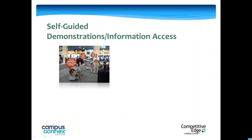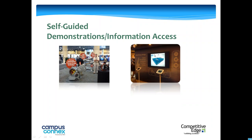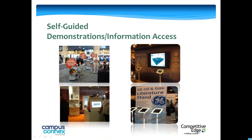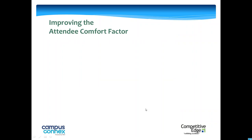Self-guided — sometimes if you have a product, it's like this example of having clear messaging right on the product. Sometimes it's having an interactive tablet connected to a flat panel on the wall. Sometimes it's right on the perimeter, like this example of an information center to learn more. Tablets to capture information and request information — these are all good ways to do it.